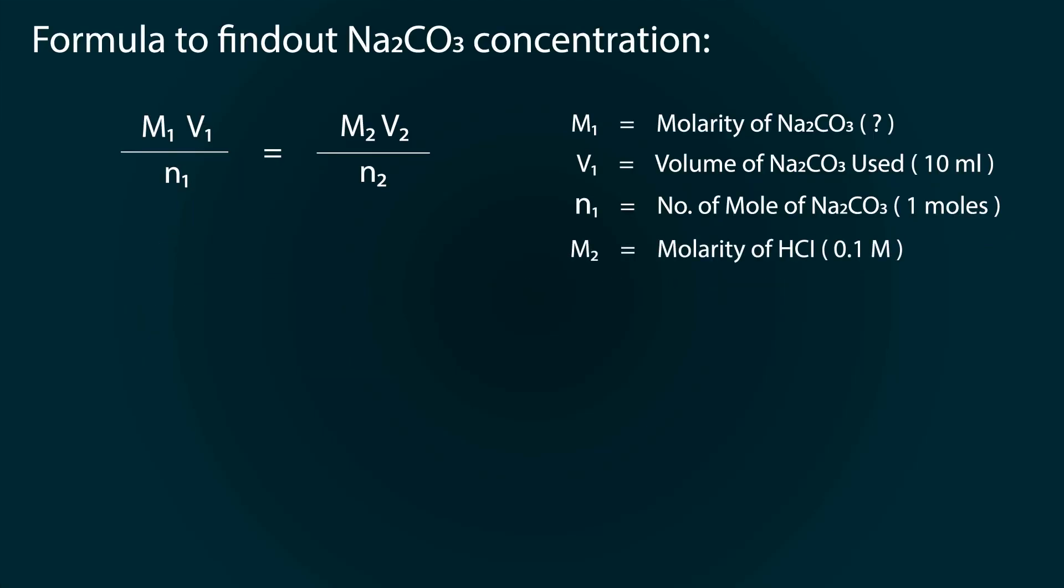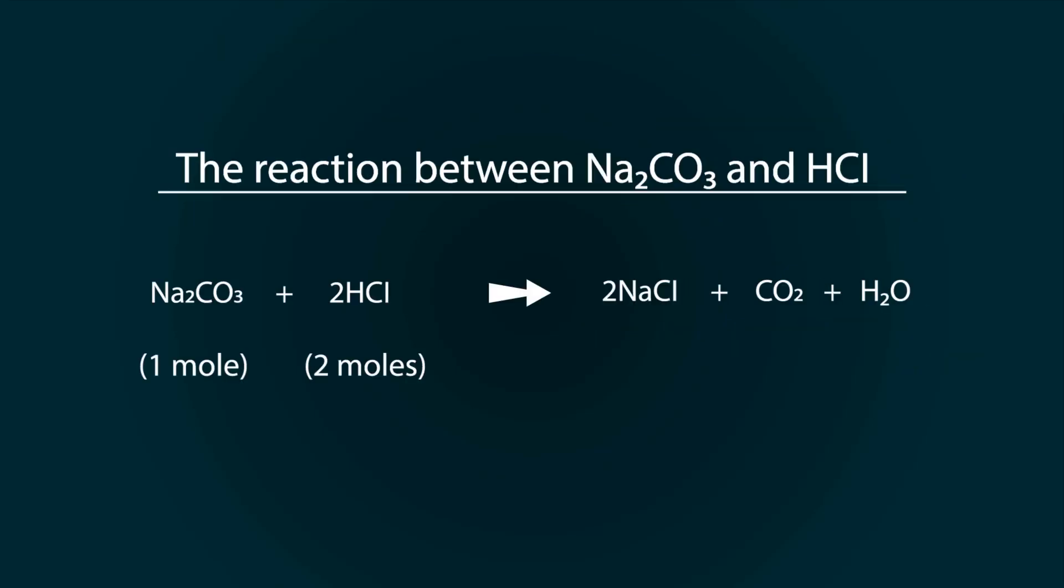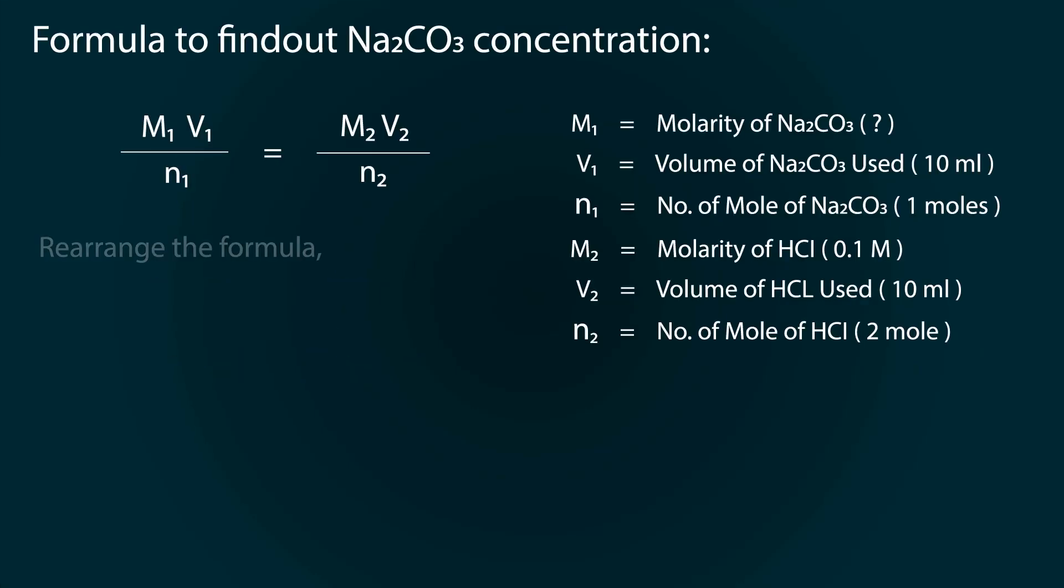M2 is the molarity of HCl, which we know is 0.1 molar. V2 is the volume of used HCl, which is 10 milliliters. n2 is the number of moles of HCl, which is 2 moles. We also got that from the reaction—2 moles of HCl are used.